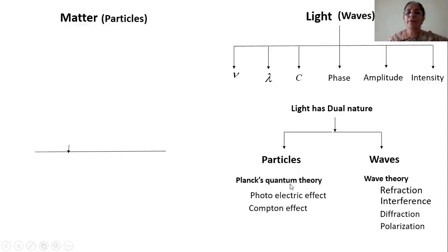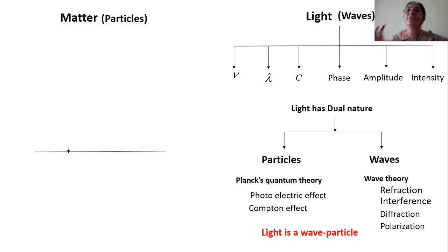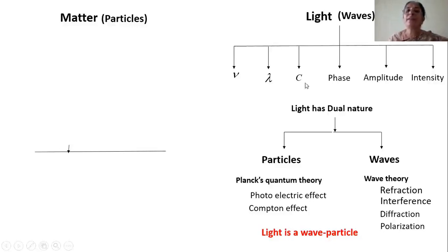Two other phenomena — the photoelectric effect and Compton effect — are based on Planck's quantum theory, which states that radiation is made up of many quanta. The minimum energy of each quanta is given by hν. That means light radiation is in terms of photons. A photon is the smallest particle whose energy is hν. Based on this concept, photoelectric effect and Compton effect are proved. These two effects reveal that light is particle in nature, while other phenomena prove it has wave nature. Thus, light has dual nature.